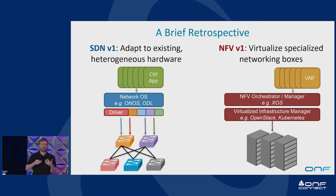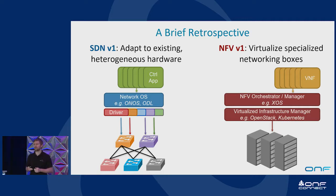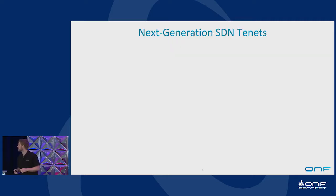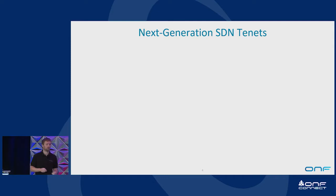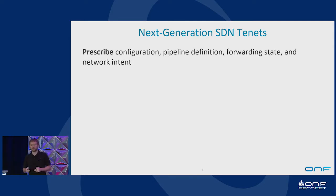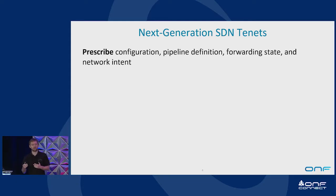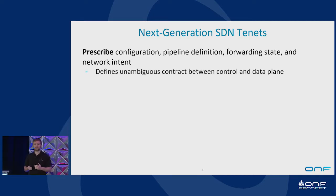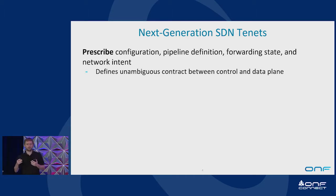But we haven't really looked at how a network gets built differently if you were to design it around the scale and agility requirements we've heard about in previous keynotes. Some of the tenants we want to talk about: first is prescription. Instead of adaptation, we want to prescribe — the configuration, the pipeline definition, the forwarding state and network intent. What this buys us is an unambiguous contract between a control plane and data plane, and an ability to write control plane applications that can do more than just the least common denominator.